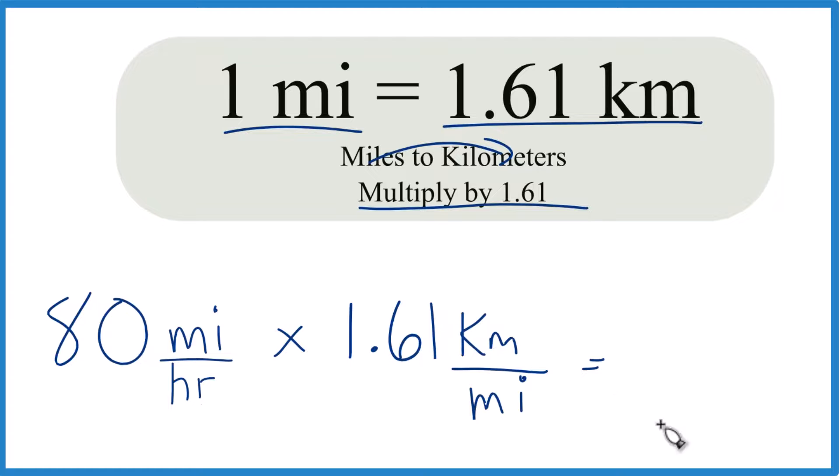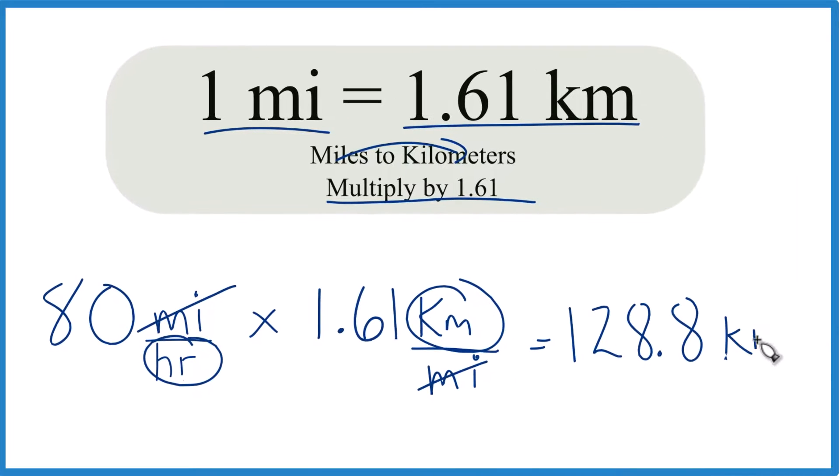80 times 1.61, that is 128.8, and that's our kilometers per hour because we have miles here and here. They cancel out, kilometers per hour. That's what's left, kilometers per hour.